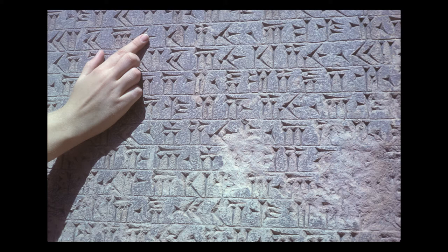Section 7 continued: "King Darius says: These are the countries which are subject to me; by the grace of Ahuramazda they became subject to me, they brought tribute unto me. Whatsoever commands have been laid on them by me, by night or by day, have been performed by them." Section 8: "King Darius says: Within these lands, whosoever was a friend, him have I surely protected; whosoever was hostile, him have I utterly destroyed. By the grace of Ahuramazda these lands have conformed to my decrees, as it was commanded unto them by me, so was it done."